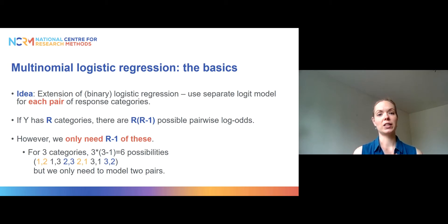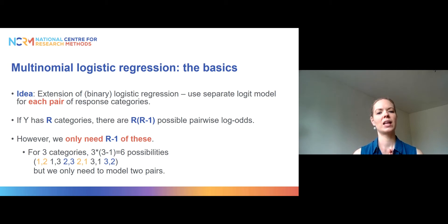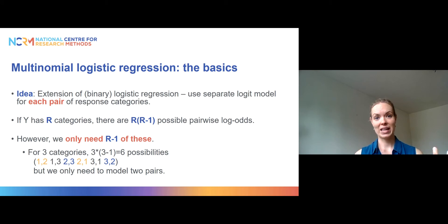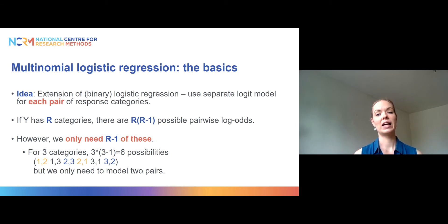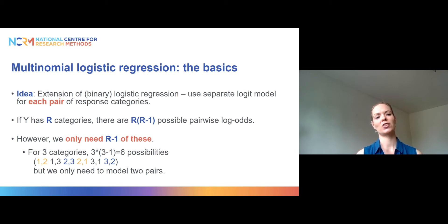The idea behind multinomial regression models is that it's basically an extension of the binary logistic regression model, which is why I recommend watching those videos first. So instead of running just one model as in binary logistic regression, we model as many pairs of categories — response categories — as we need. If our outcome variable has r number of categories, we only need r minus one of these models.